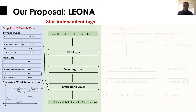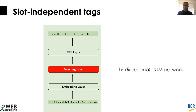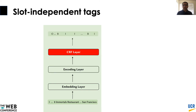Step 2 uses these features to initialize the embedding layer. The embedding layer uses a two-layer highway network to combine these features. Then a bidirectional LSTM network is used to capture temporal interactions between input words. A CRF layer is used to predict IOB tags irrespective of the slot type. Unlike previous work that uses these IOB tags to predict final slot types, we use these predictions as hints for the next step, and these hints are a lot better than the ones we got from Step 1.